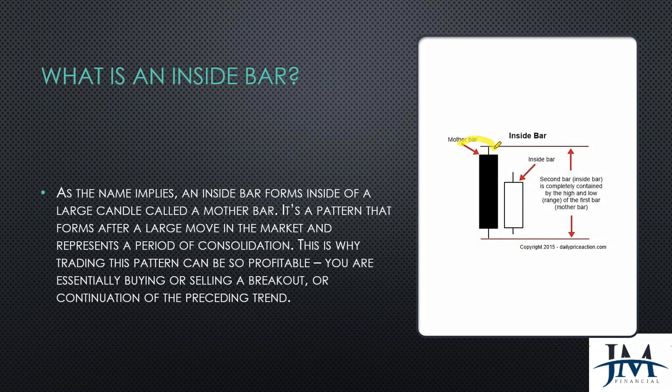This is known as the mother candle, and this second candle is what we call the inside bar. We don't care whether it has long wicks, short wicks, whether it's a doji or a hammer — we're not talking about Japanese candlestick patterns. The inside bar is completely contained by the high and low of the first bar, the mother candle. So we have the mother and the inside bar.